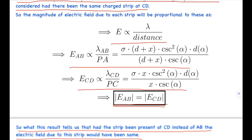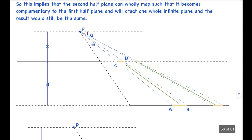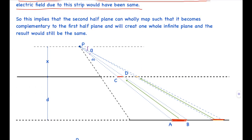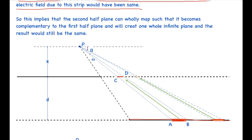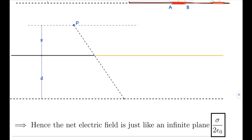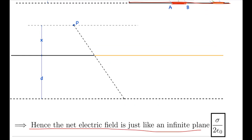This implies that all of the second half-plate can be mapped onto the first half-plate in the same way. The whole second half-plate maps to the region of the first half-plate, so it's as if the second plate is compressed onto the first, completing an infinite plate with surface charge density sigma. As shown, the yellow region represents the compressed plate. Hence the net electric field outside is just like that of an infinite plane: sigma over two epsilon-naught (σ/2ε₀) on both sides.